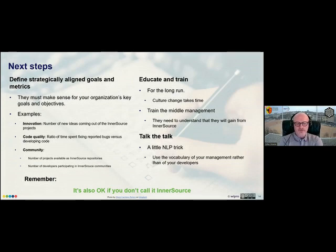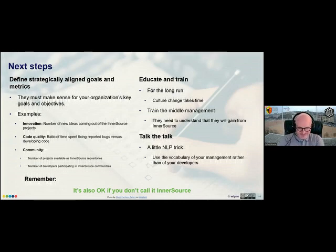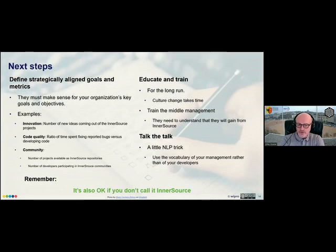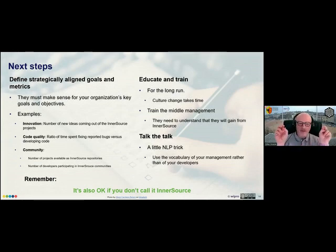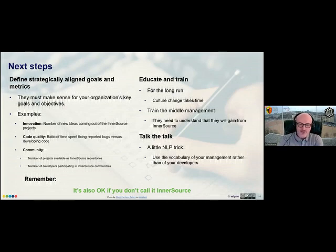For code quality, if you've been struggling with bugs, measure the ratio of time spent fixing reported bugs versus developing new code. If you want to build a community — which is a means to an end, not the end itself — set temporary goals like number of projects available as InnerSource repositories, or number of developers participating in InnerSource communities. Once you have that culture in place, it tends to run by itself and you may not need to measure it as intensively — keep the fire kindled but it doesn't need to be a key objective.